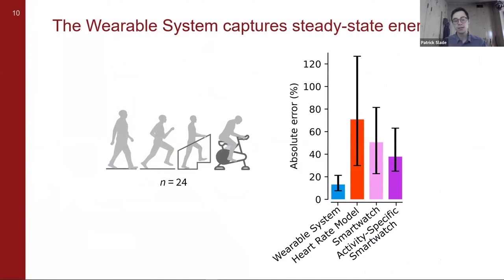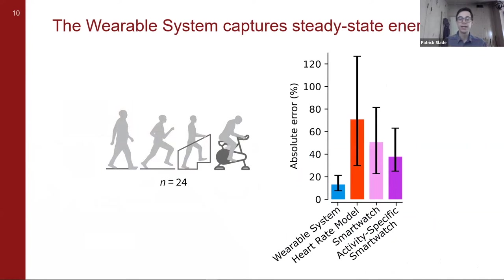When we looked at performance across our diverse participant group, we saw that the wearable system accurately captured steady-state energy use and had about three-fold lower error than heart rate models or smartwatches. This indicates it works quite well in settings where, say, you're on a treadmill for several minutes exercising — we can capture that energy expenditure quite accurately.